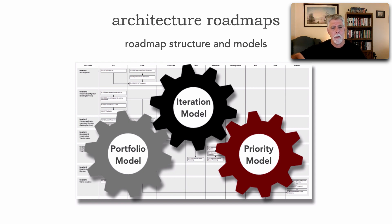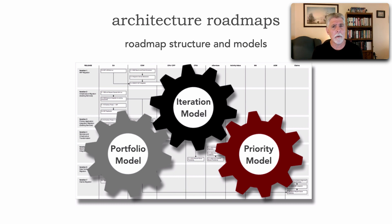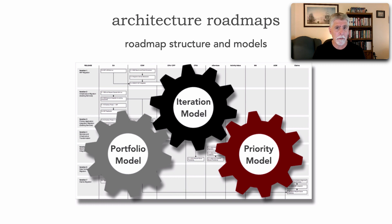These three models are like cogs — any change to one model necessarily requires a change in the others. One of the complexities of a roadmap is keeping all three models in sync. If you move any of these cogs, it impacts the other two. In future lessons — lesson 97 for the iteration model, lesson 98 for the portfolio model, and lesson 99 for the prioritization model — we'll look at what each consists of to finally create the consolidated view.